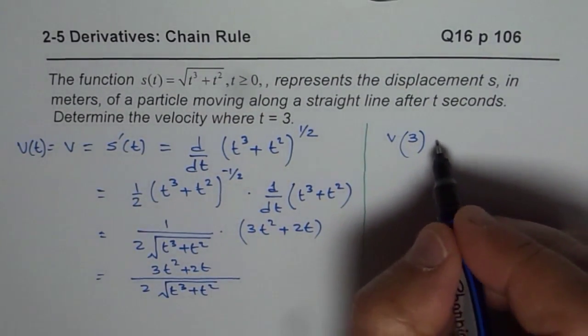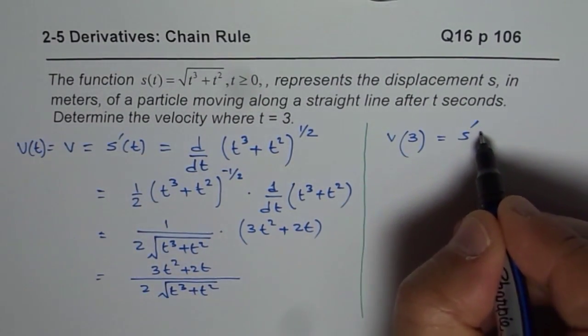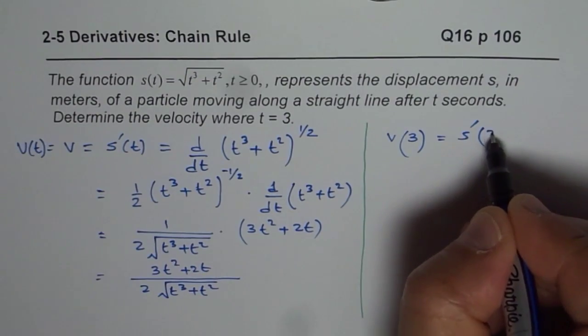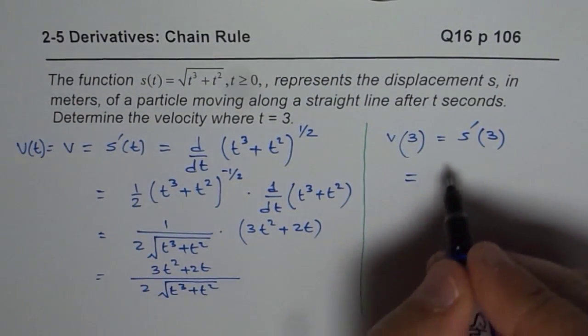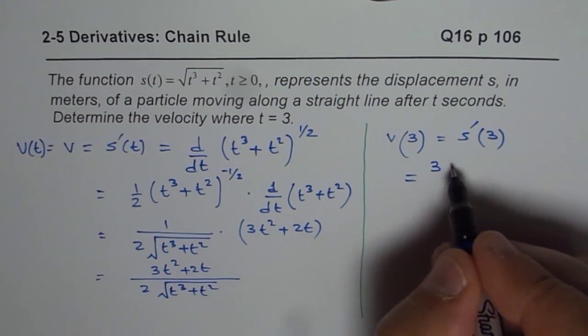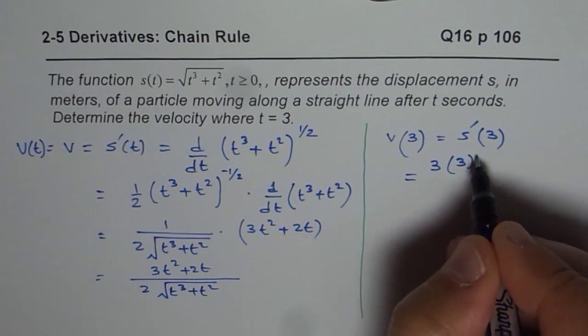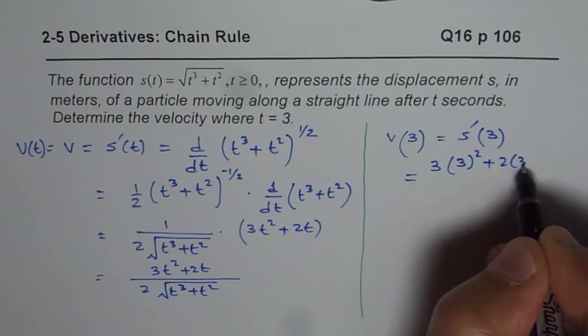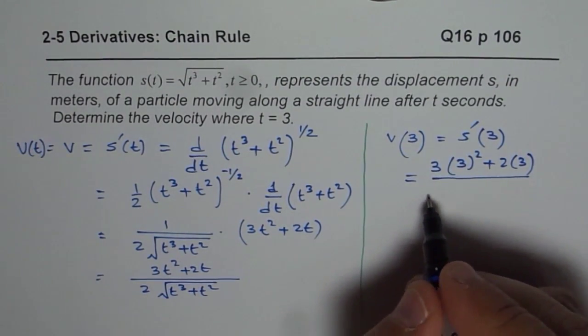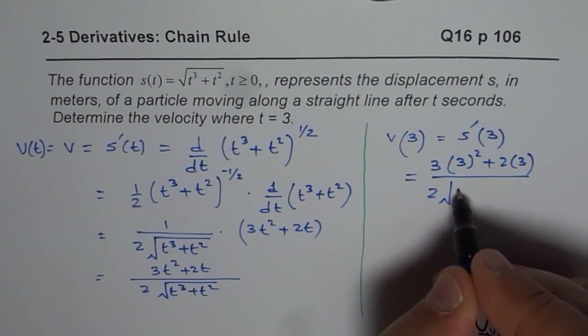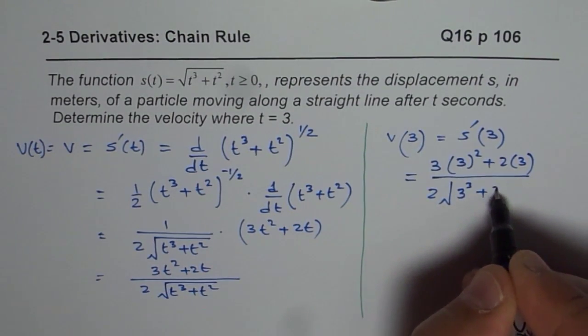Velocity at 3 would be derivative of displacement at t equals 3, so we will substitute 3 here. We get 3 times 3 square plus 2 times 3 divided by 2 square root of 3 cube plus 3 square.